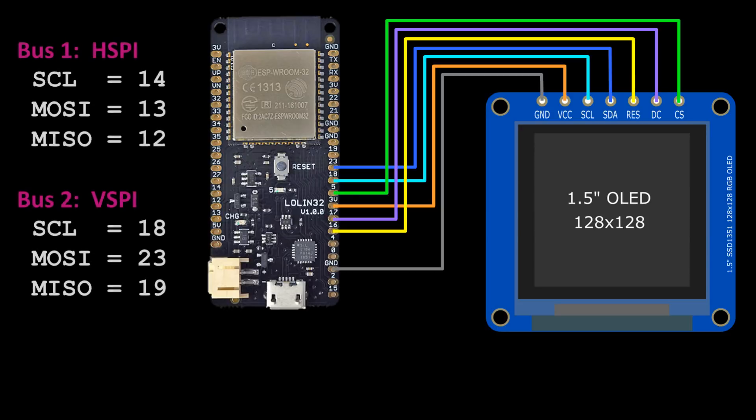There are currently two available hardware SPI hosts on the ESP32: HSPI and VSPI. VSPI, which I'm using here, allocates pin 18 for clock, pin 23 for MOSI and pin 19 for MISO. Since the display is write only, MISO is not needed. HSPI uses 14, 13 and 12 for clock, MOSI and MISO respectively. There are two other SPI buses but they're currently reserved for the core system. This may change in the future.